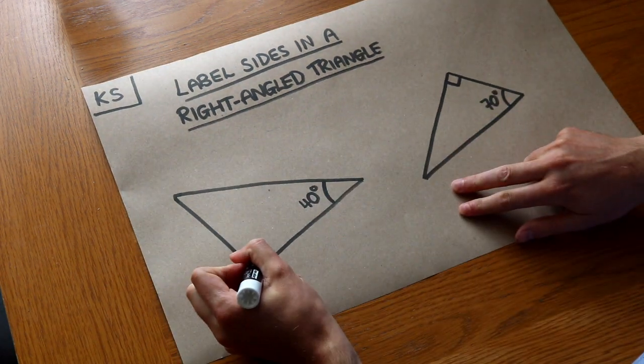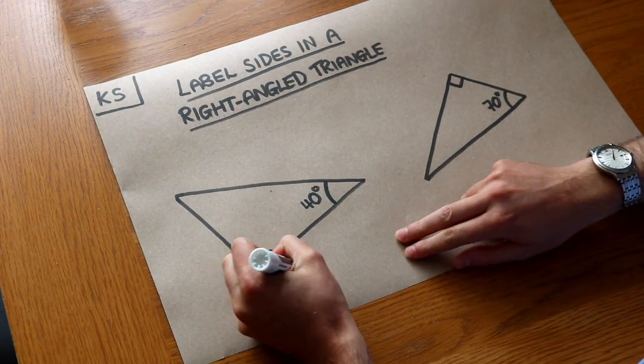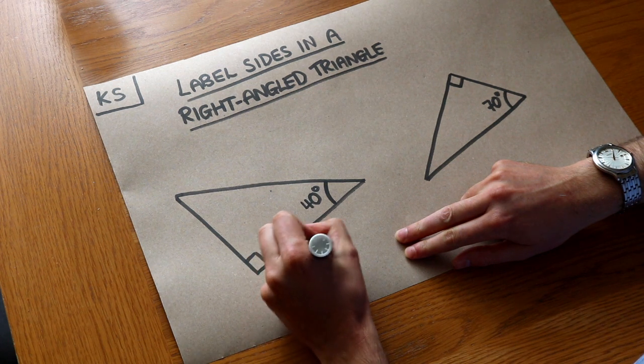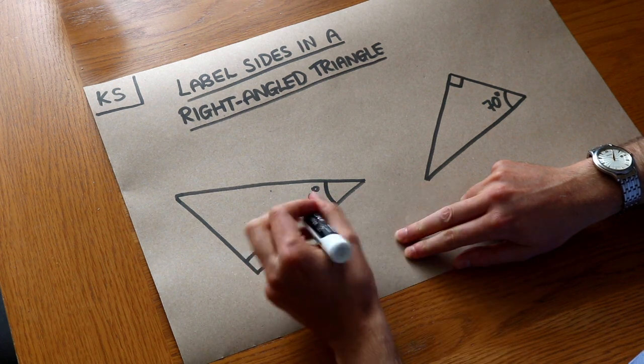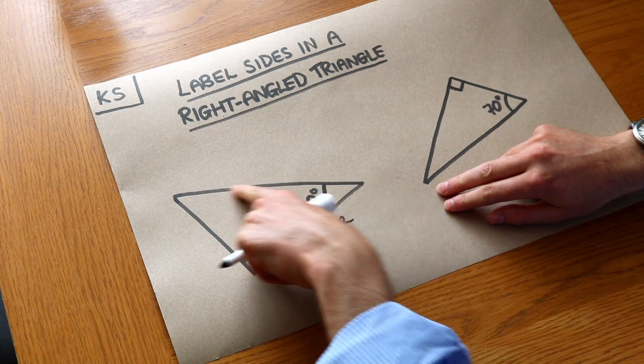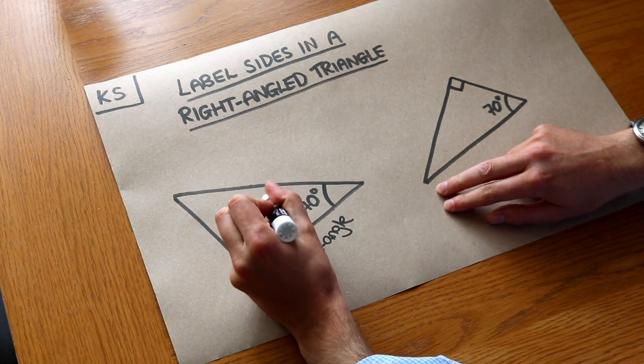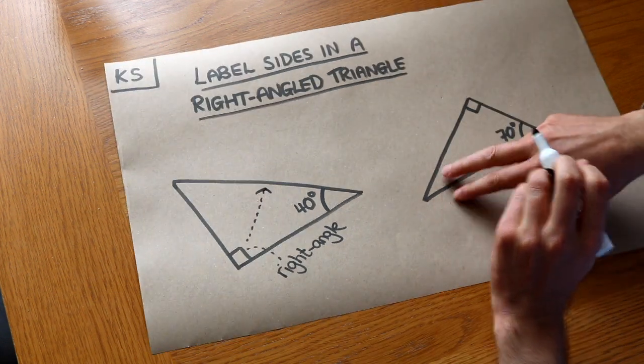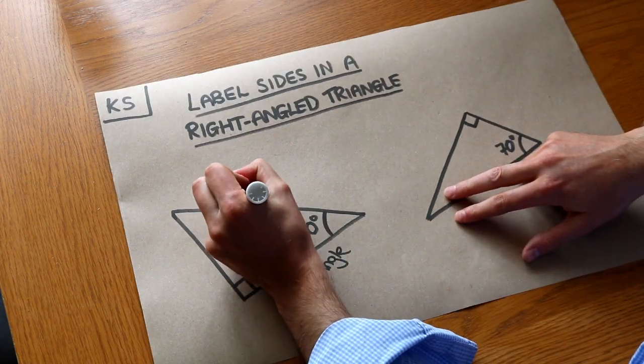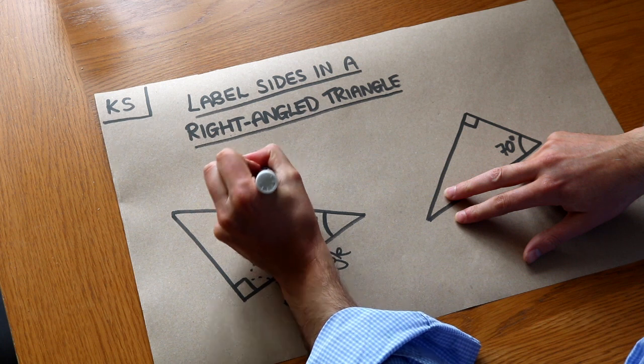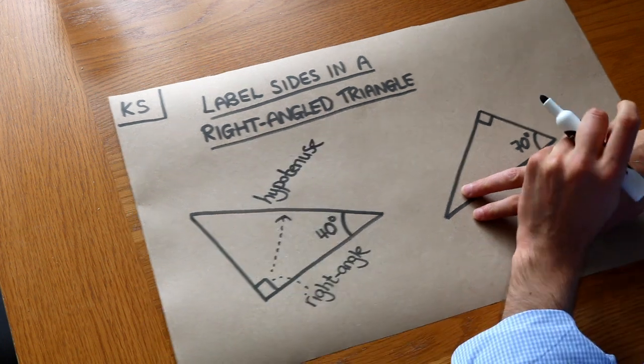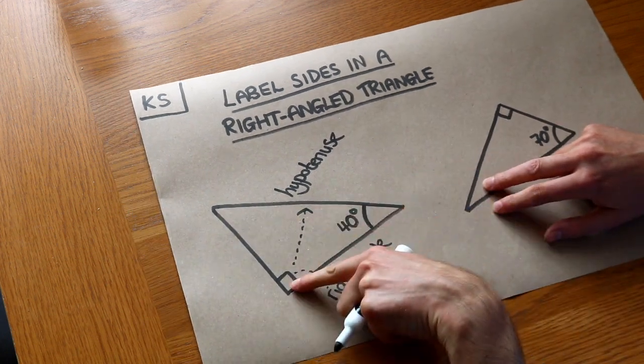Now you may know that this here is called a right angle, and a right angle is just an angle of 90 degrees. Now this longest side of the right-angled triangle, which notice is opposite this right angle, that is known as the hypotenuse. So the longest side of the right-angled triangle is opposite this right angle.